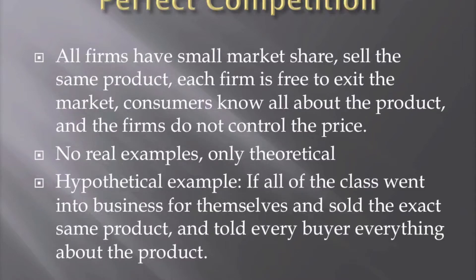Finally, let's talk about perfect competition. Since there's no real definitive real-life examples for perfect competition, it's kind of hard to explain, but I'll do my best. Perfect competition is where all of the companies in the industry have a small market share, sell the exact same product — same name, blueprints, and everything. Every firm is free to enter and exit the market. Consumers know everything about the product, and the firms do not control the price of that product, except by an outside entity.